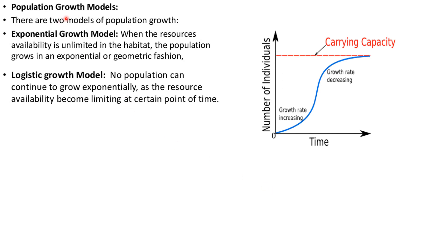There are two types of growth models for population. The first is the exponential growth model: when resources are available in unlimited amounts in the habitat, the population grows in an exponential or geometrical fashion. The second is the logistic growth model: no population can continue to grow exponentially as resources become limited at a certain point, leading to a decline or decrease in the growth rate.